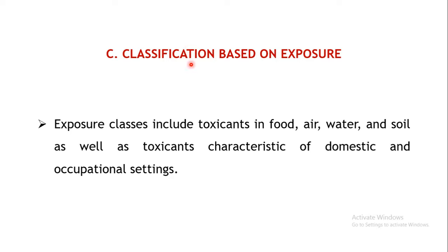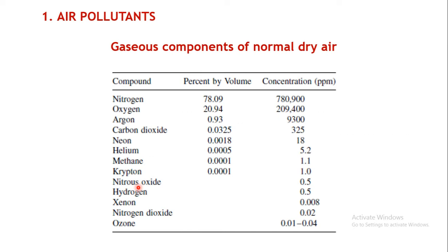The third type of classification is based on the exposure — how the exposure has taken place and from where the toxicant entered. Toxicity may arise from toxicants in food, air, water, soil, domestic procedures, or occupational settings. Under this, the first sub-classification is air pollutants — airborne toxicants. This is the composition of normal dry air: air is a mixture of several gases and components in particular amounts, which may get polluted by gases, smoke, dust, or particulate matter. Air pollutants can be sub-classified as gaseous pollutants and particulate matter.